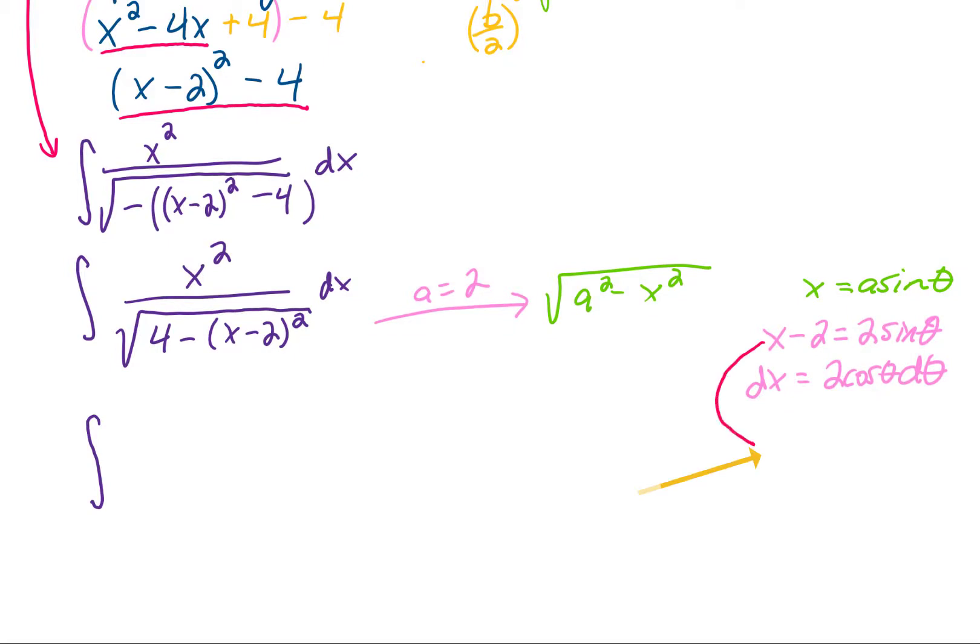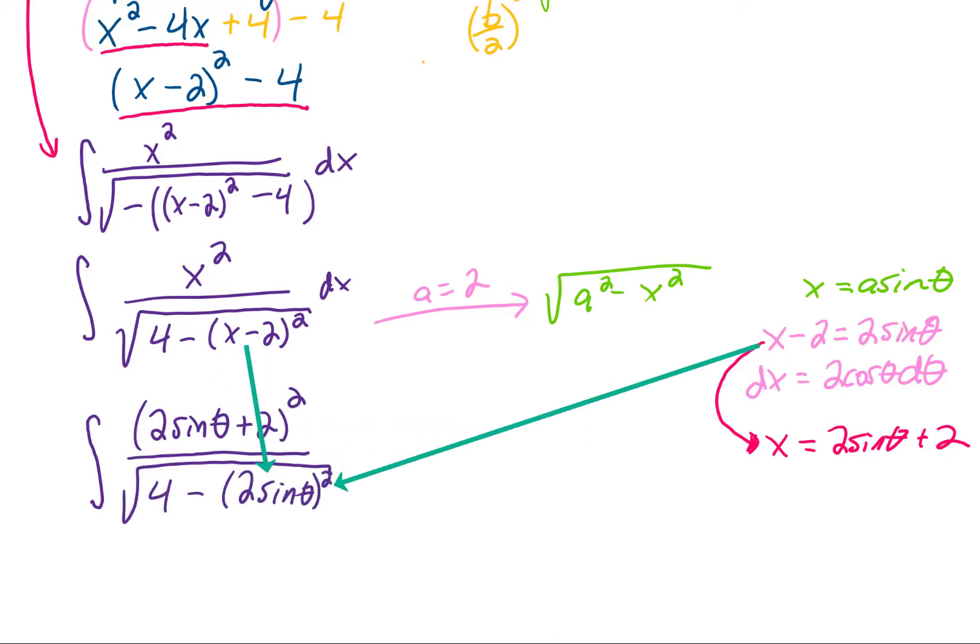And now we can plug all of that into our integral to see what we get. Before we can make that substitution, though, it looks like we also need to solve for x. If we do that, we get x equals 2 sine theta plus 2. Okay, now let's replace x squared with 2 sine theta plus 2 squared. Let's replace x minus 2 with 2 sine theta. And let's replace dx with 2 cosine theta.